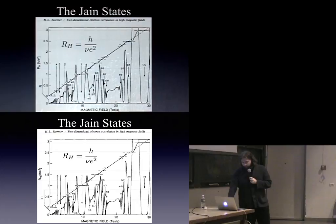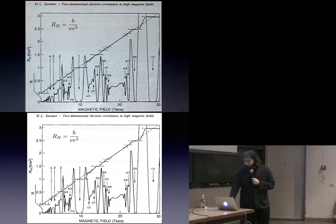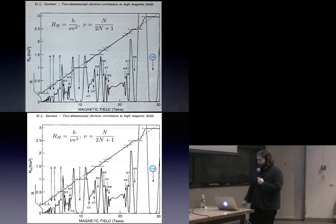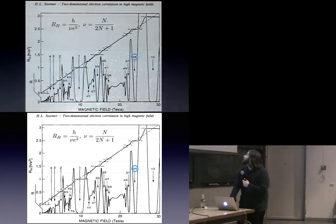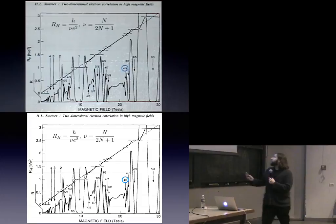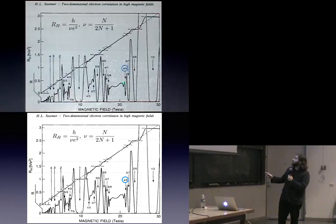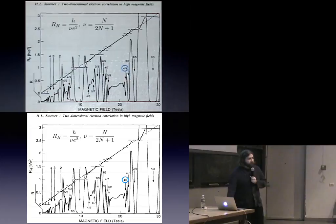One-third is the famous Laughlin state — it's very nice. But you notice there are a whole bunch of other states in here. And what we're going to focus on today is a bunch of states studied originally by, among other people, Jain — so they're often referred to as the Jain states. Newer experiments have confirmed that the normal conductance really dips down to zero, and there really are good, robust plateaus there.